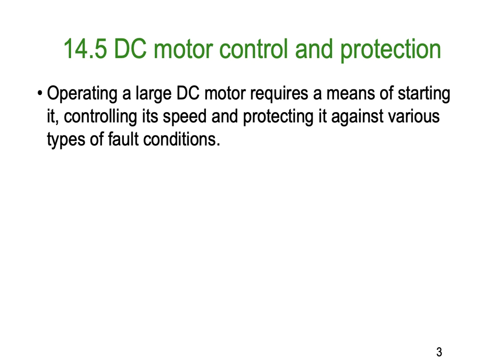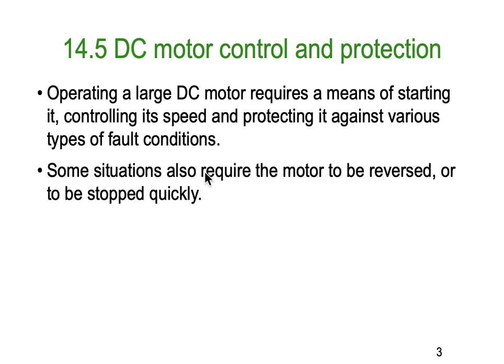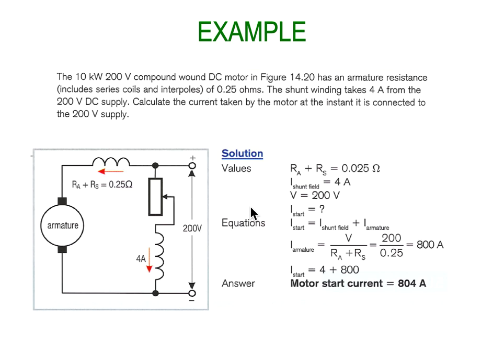First, DC motor control and protection: operating large DC motors requires a means of starting it, controlling its speed, and protecting it against various fault conditions. Some situations also require the motor to be reversed or stopped quickly, and we're going to look at a couple of ways you can do that.